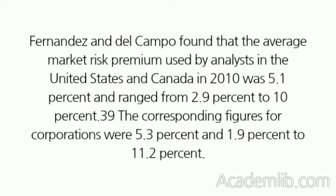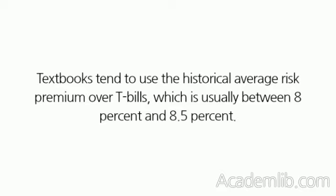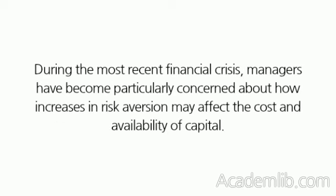Fernandez and Del Campo found that the average market risk premium used by analysts in the United States and Canada in 2010 was 5.1% and ranged from 2.9% to 10%. The corresponding figures for corporations were 5.3% and 1.9% to 11.2%. Textbooks tend to use the historical average risk premium over T-bills, which is usually between 8% and 8.5%. During the most recent financial crisis, managers have become particularly concerned about how increases in risk aversion may affect the cost and availability of capital.